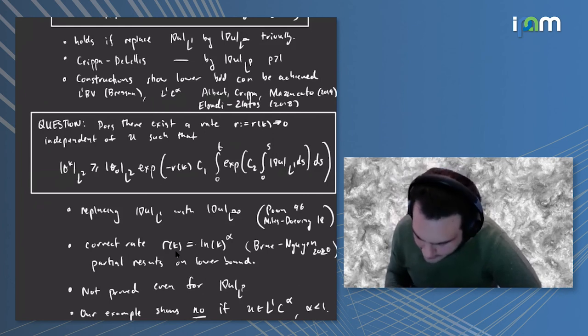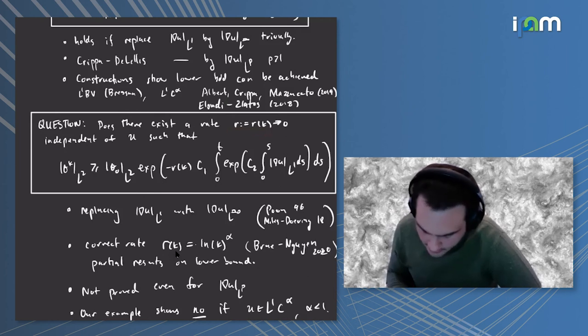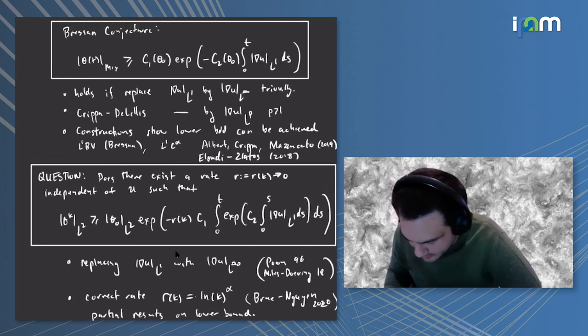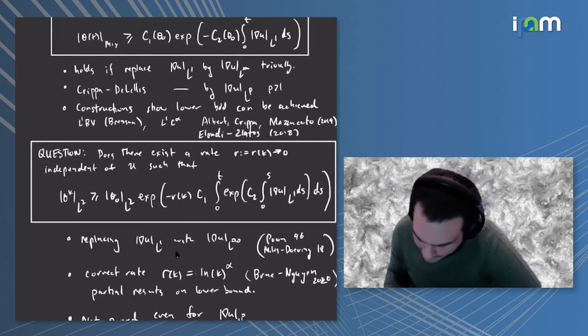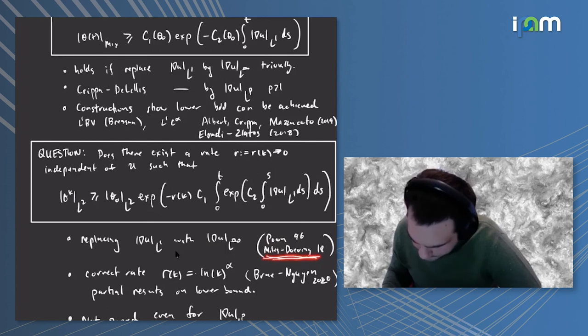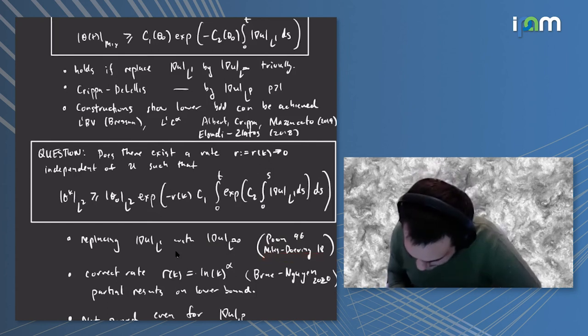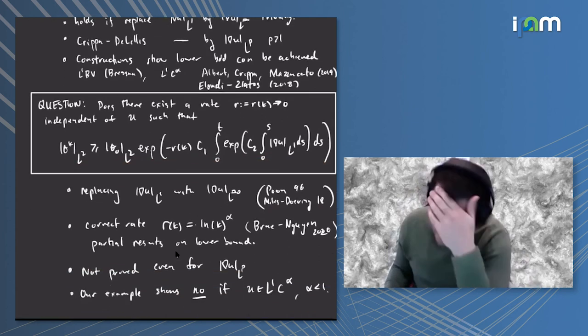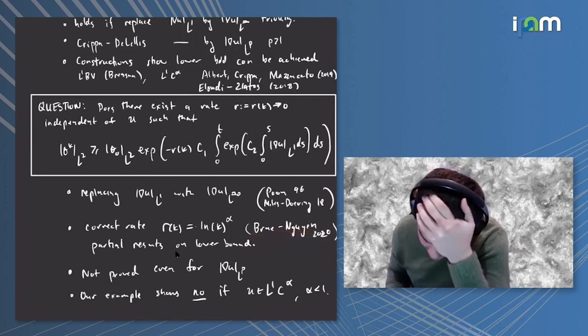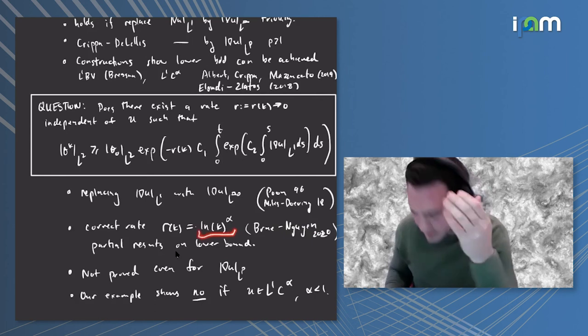Our question is: does there exist some rate depending on kappa such that the L2 norm of the diffusive problem has some quantitative lower bound? In this case, instead of being a single exponential, the relevant thing is this double exponential lower bound which can be seen directly if you replace L1 by L∞. This is the argument of Poon and is also in this paper by Miles and Doering. But in general, can you have such a bound? It turns out after we put out our paper that Brué and Nguyen recognized that the correct rate is logarithmic in the diffusivity and proved some partial results establishing this lower bound, although in general it's open.